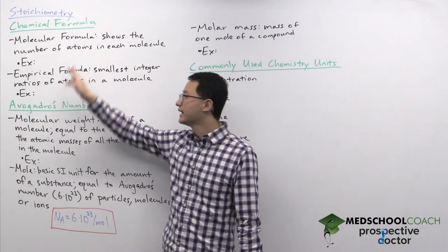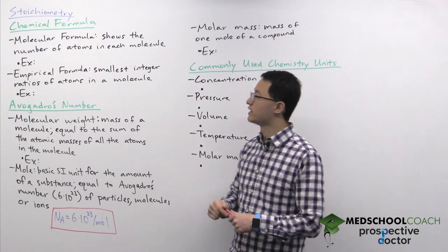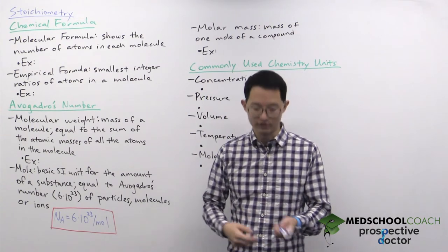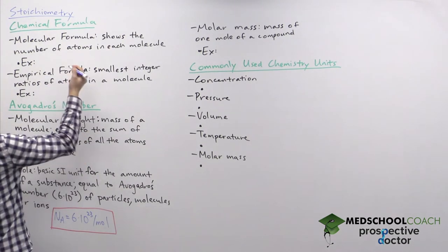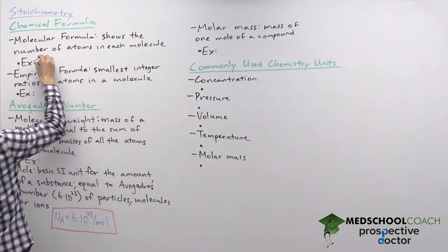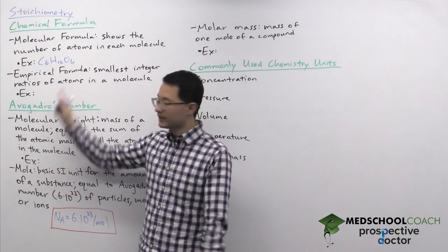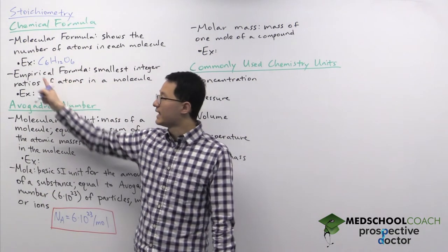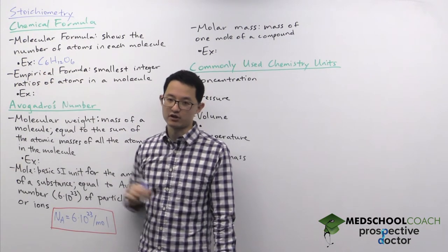There is the molecular formula and the empirical formula. The molecular formula shows the number of atoms in each molecule. So for example, if we were to consider glucose, glucose has a molecular formula of C6H12O6. This means that each molecule of glucose has six carbon atoms, 12 hydrogen atoms, and six oxygen atoms.